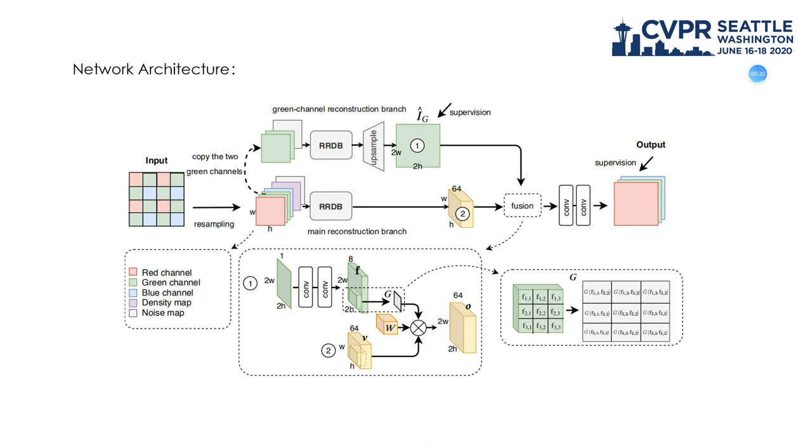we propose a self-guided network, where the green channel is initially recovered and used to construct an adaptive guiding feature to guide the recovery of the missing values.